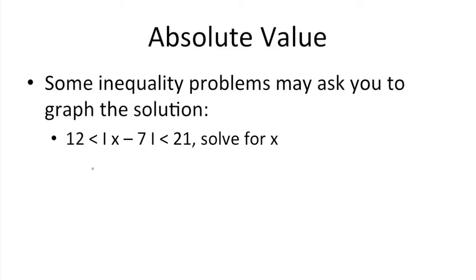So first up, just remove the absolute value symbols. We also need to figure out the answer in case the absolute values are negative. So 12 is less than negative x plus 7. Remember, like in previous examples, we need to put a negative through what's there. So that's less than 21. Now solve for these inequalities.